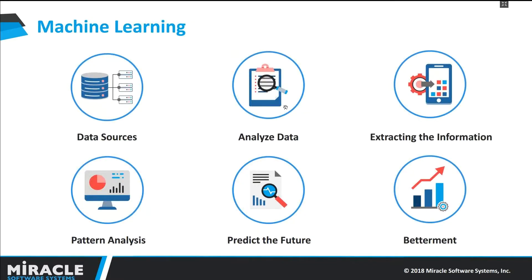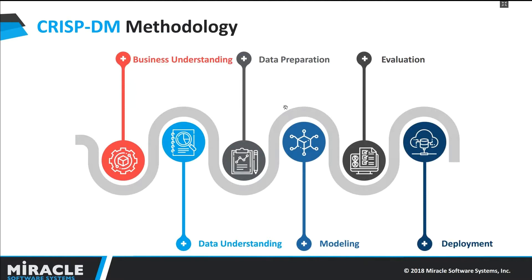Machine Learning is a field of computer science that gives computers an ability to learn without being explicitly programmed. The process of learning begins with observations or data collected from different data sources. The data needs to be analyzed in order to find useful information and hidden patterns to make better decisions in future based on historical data. We can perform all this using CRISP-DM methodology, which stands for Cross Industry Standard Process for Data Mining. IBM SPSS Modeler follows this method, and it is a data mining process divided into six major phases through which we can handle a business problem.